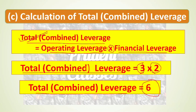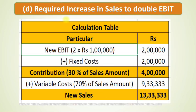Now we will discuss the last part of the question: the required increase in sales to double the EBIT. Currently EBIT is 1 lakh rupees; doubling it gives a new EBIT of 2 lakh rupees. We will use a reverse formula approach — working backwards from the new EBIT to find the new required sales.